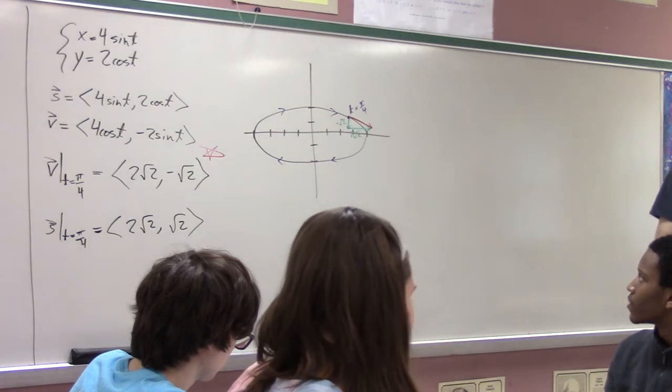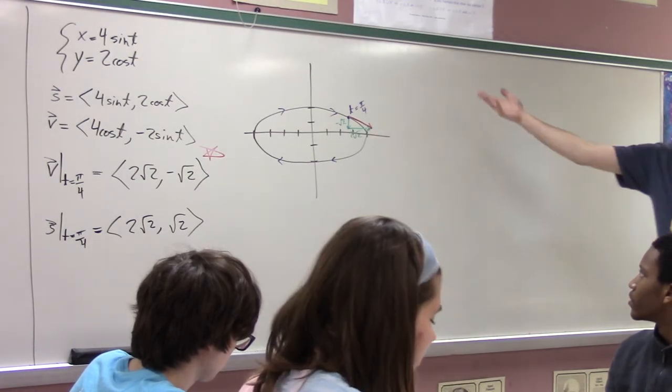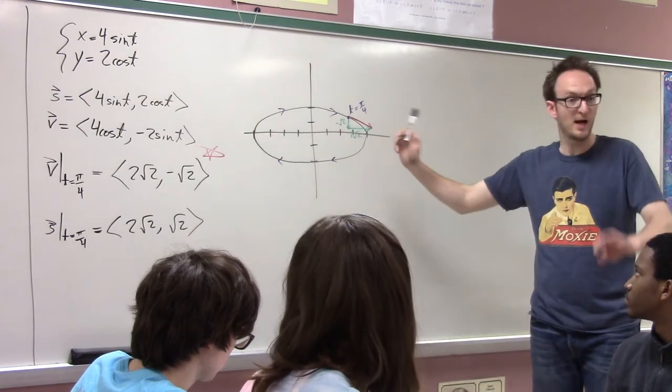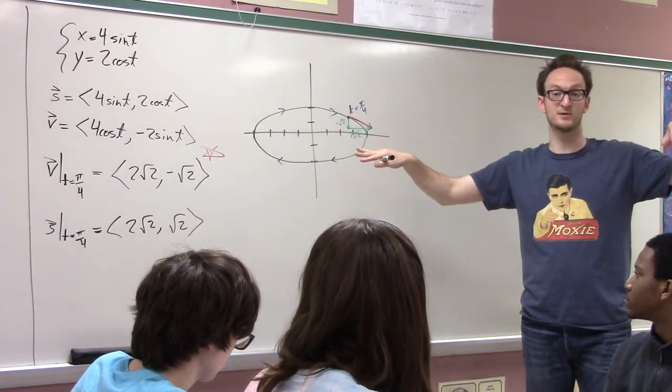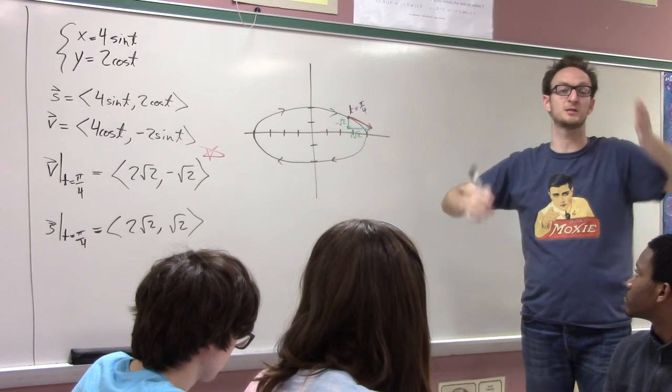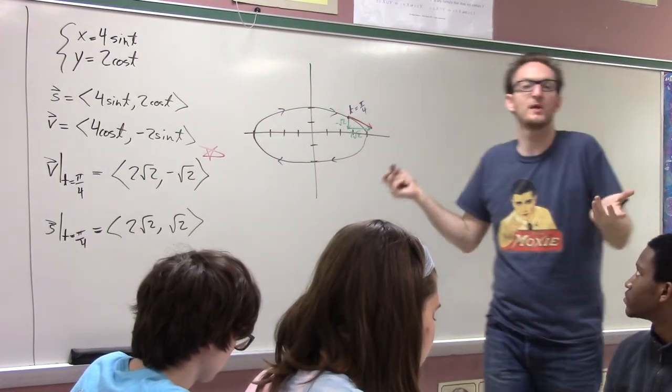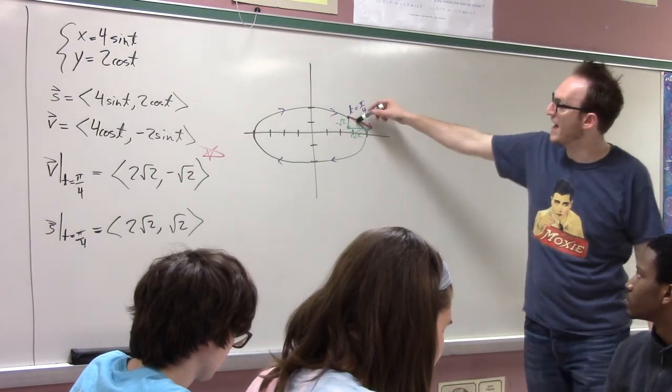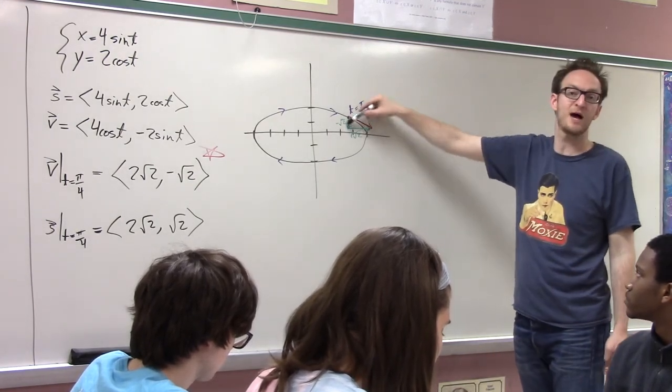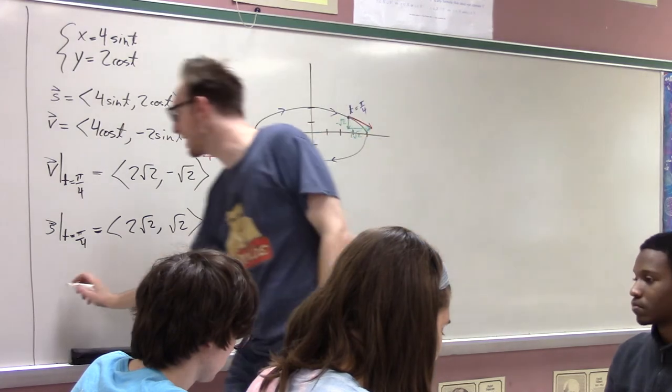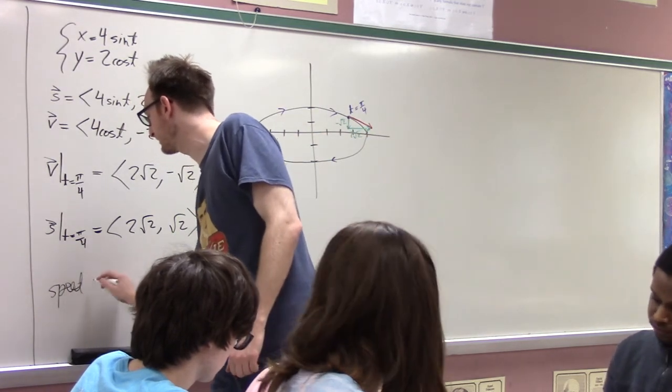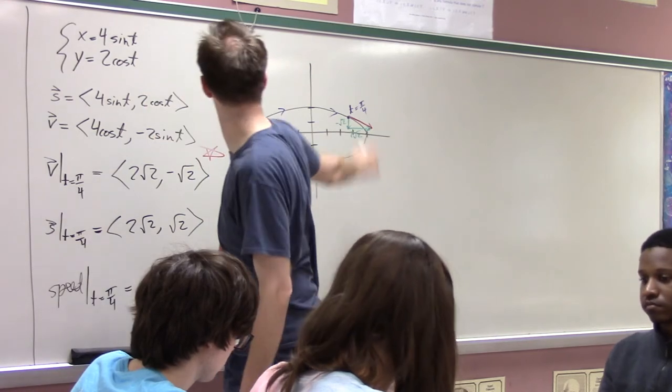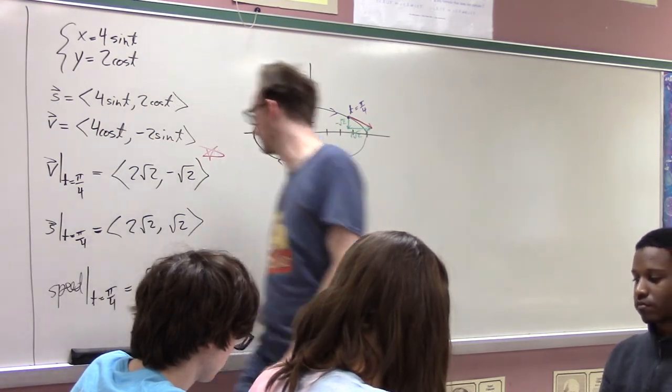Now comes actually answering the question, what is the speed? √10. Yeah, why? Because you just do Pythagorean theorem. The speed, when you're doing fake vectors which are just one-dimensional, then the speed is just the absolute value of the velocity. But here, the speed is the magnitude of the velocity vector. The magnitude of the velocity vector is just the length of the hypotenuse of that triangle. So the speed at t equals π/4 is by the Pythagorean theorem √10.